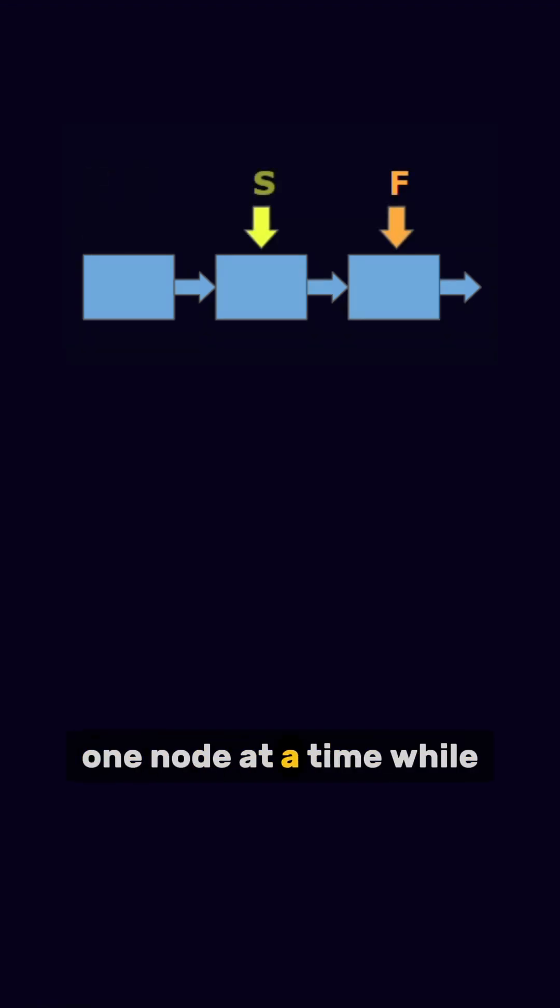the slow pointer moves one node at a time, while the fast pointer moves two nodes at a time. When the fast pointer reaches the end, the slower pointer is in the middle.